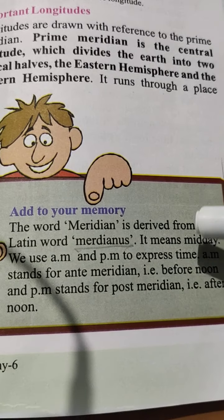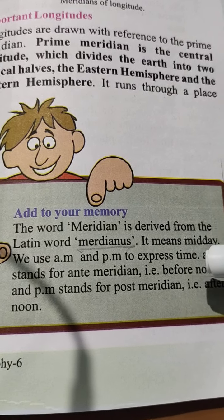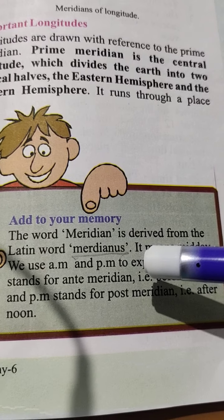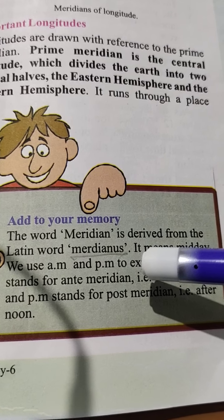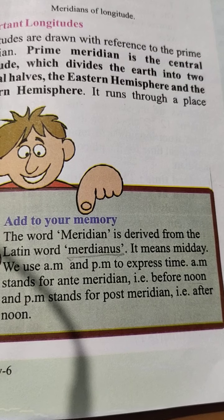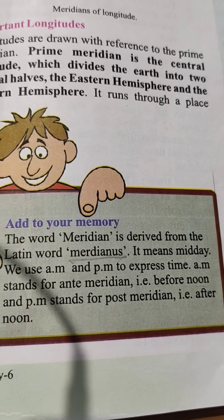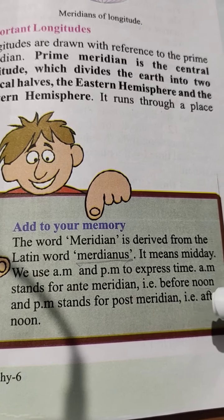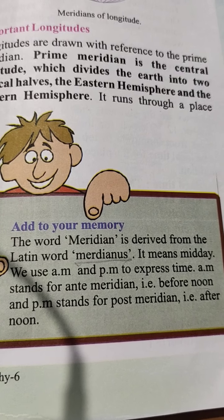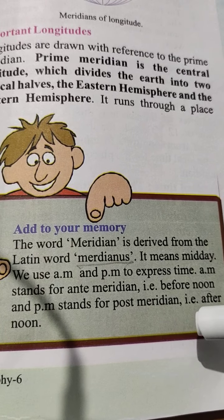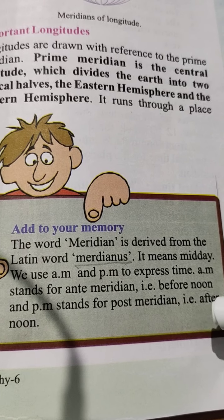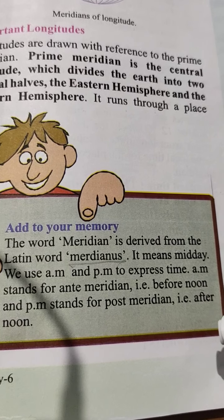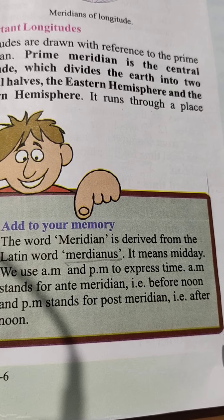The word meridian is derived from the Latin word medianus. It means midday. We use AM and PM to express time. AM stands for ante meridian — before noon — and PM stands for post meridian — afternoon.